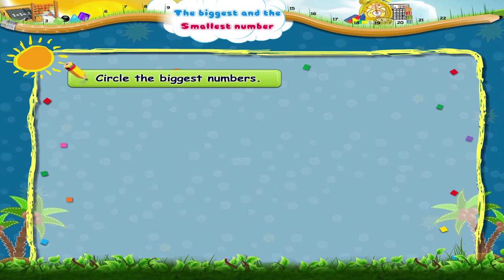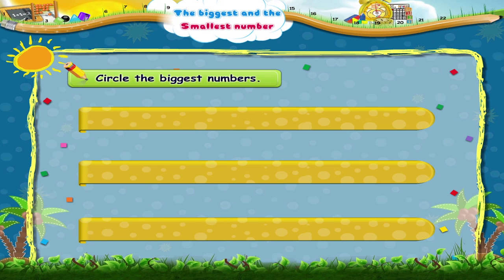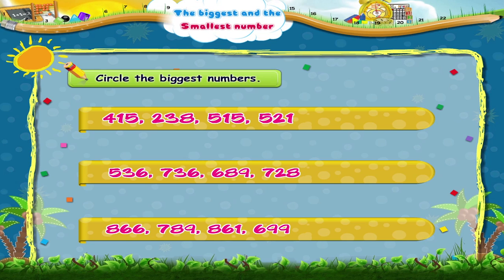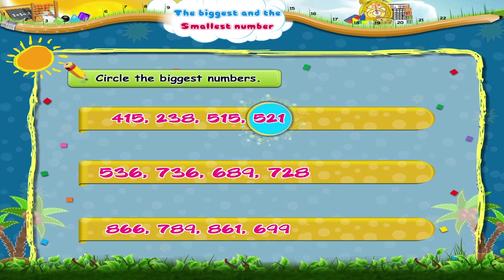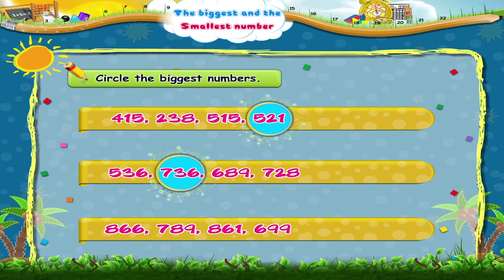Now circle the biggest of these numbers. In the first set, the biggest number is 521. In the second set, the biggest number is 736. In the third set, the biggest number is 866. Now you know how to compare numbers and find the biggest and smallest number from a set of numbers.